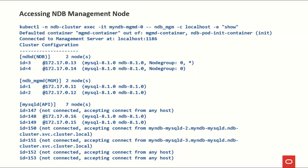To access the management node and check running services, we use: kubectl -n ndb-cluster exec -it mysql-myndb-mgmd-0 — meaning we log into management node number zero — then execute ndb_mgm, the management client tool, with -c localhost since we are already inside the management node pod, and -e show to display all nodes. The output shows NDBMTD and NDBD — interesting because NDBMTD is multi-threaded and NDBD is single-threaded. The pod name is NDBMTD but the show command reports NDBD — something that needs improvement. This operator is not yet GA, so you can try it to understand the concept of NDB cluster.